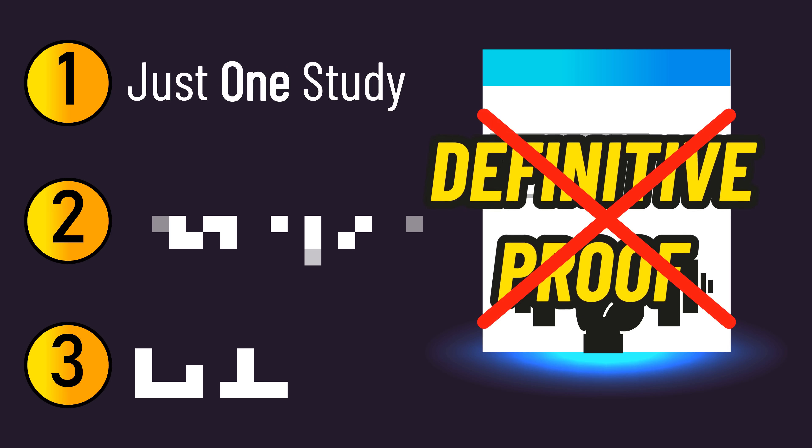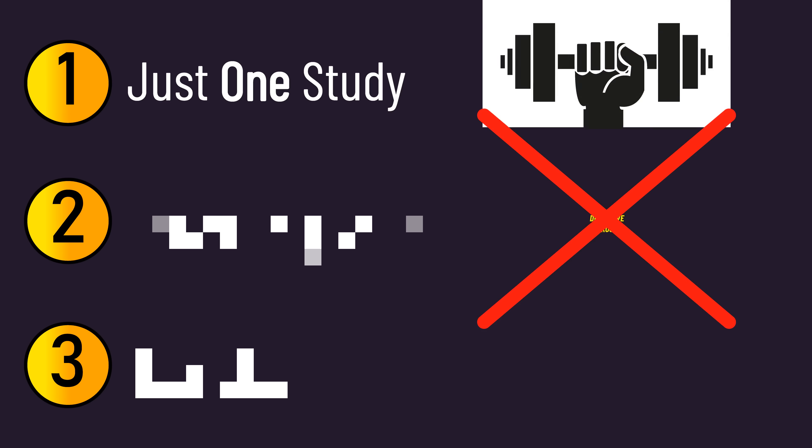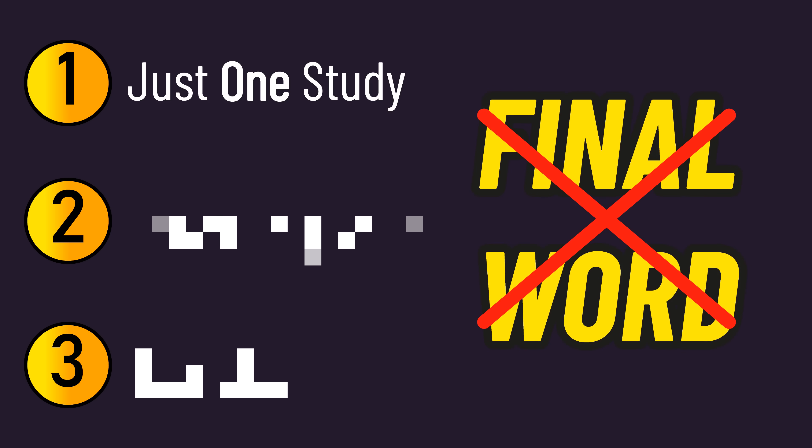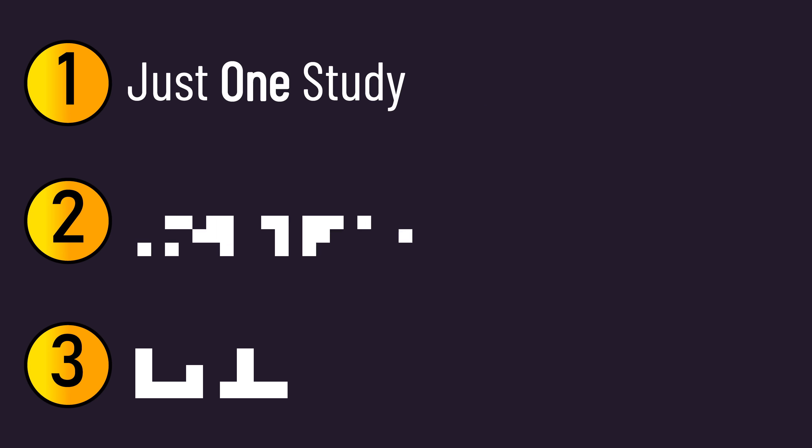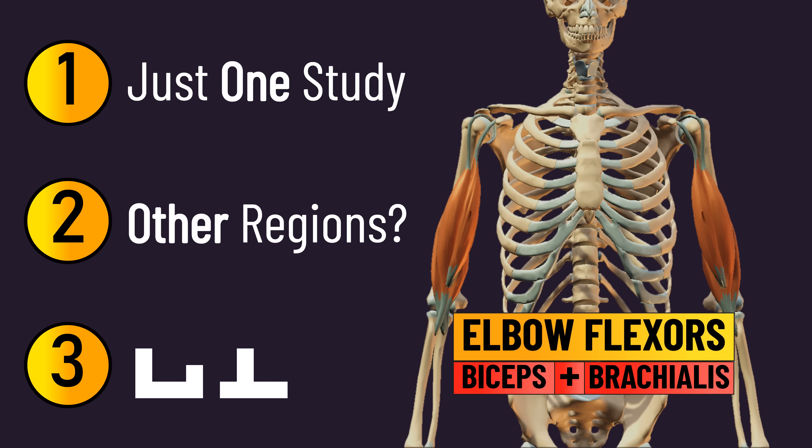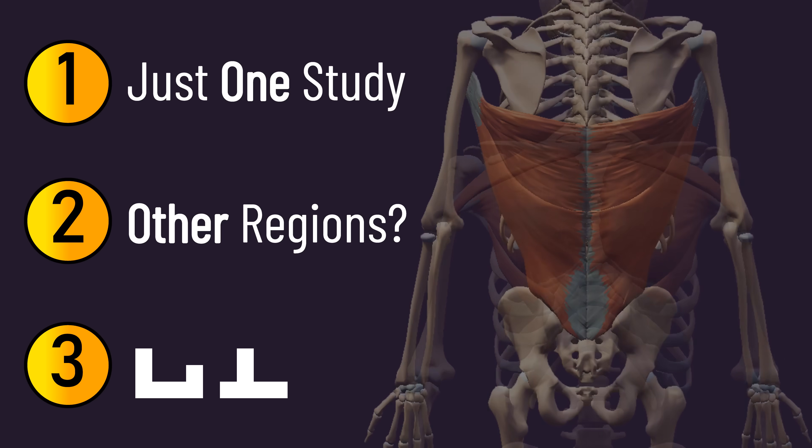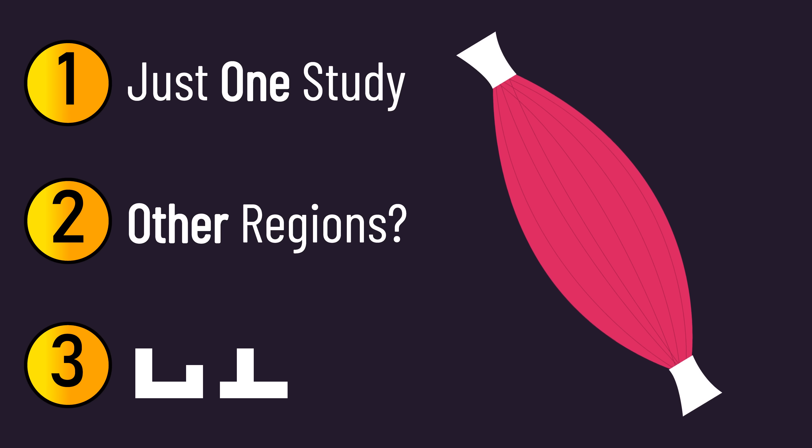One study isn't enough to definitively prove anything, so this isn't the final word on long-length partials. Secondly, remember that elbow flexor and triceps thickness was measured at 45 and 55 percent regions. But what about other muscles like the chest and lats? We also know muscles do not necessarily grow identically across their regions.